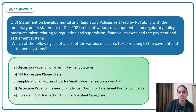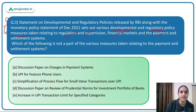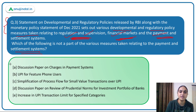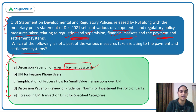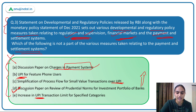The third question covers the Statement on Development and Regulatory Policies released by RBI along with the December 2021 monetary policy statement, which sets out measures relating to regulation and supervision, financial markets, and payment and settlement systems. The question asks which of the following is NOT part of measures taken on the payment and settlement system. The discussion paper on review of prudential norms for the investment portfolio of banks is NOT related to payment systems — it falls under regulation and supervision. That is the incorrect option.